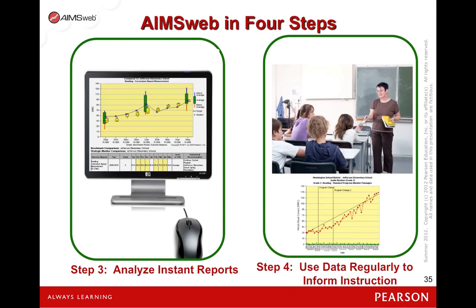Step 4: use the data regularly to inform instruction. The goal is to use AIMSweb data to inform our instruction. The universal screens allow us to know who we need to dig deeper with on progress monitoring tools, and the progress monitoring tools help us to determine if our instruction is making an impact. Remember, we are always looking for trends over time. The primary purpose of AIMSweb is to quickly obtain the information needed to make data-based decisions using reliable, valid data.